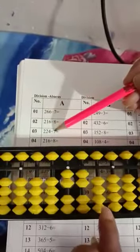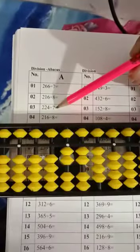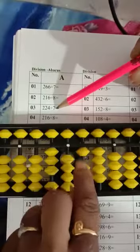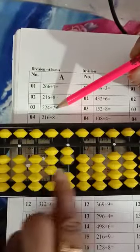Third one, question says 2, 2, 4, divide by 7. So 7, 3 is a 7, 3 is a 20 and minus 1. We have 14. 7, 2 is a minus 14. Answer is 32.